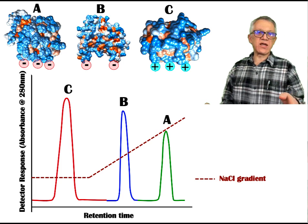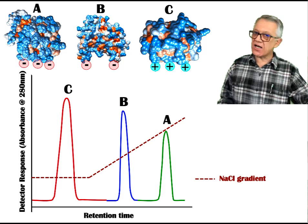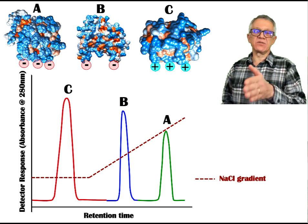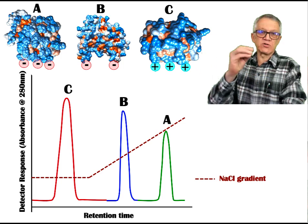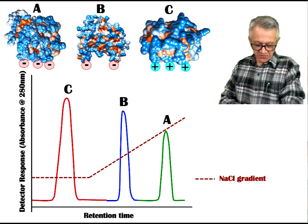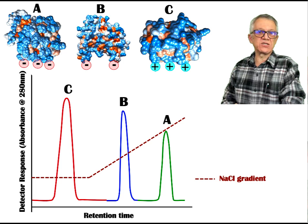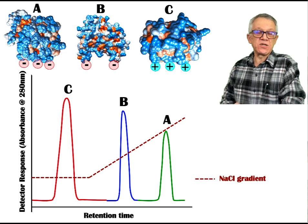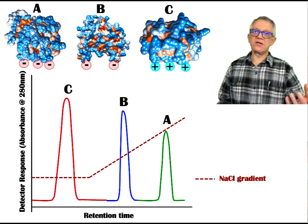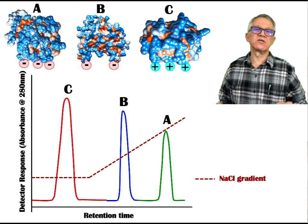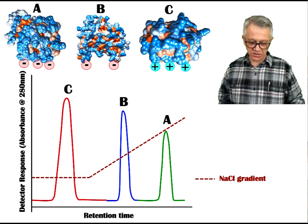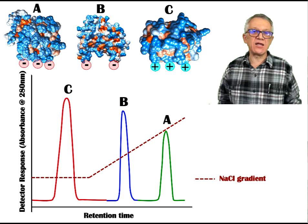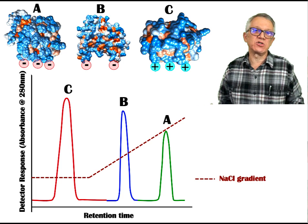The protein that was not retained is the first to come out, with the shortest retention time in the chromatogram. Then protein B was retained by the column, but with the increasing salt concentration it is released first because it was bound less tightly. Protein A was more tightly bound and needs a higher sodium chloride concentration to be removed. So the three proteins are released — C, B, and A — in that order of increasing retention time. I hope that's crystal clear now, this issue of ion exchange chromatography.